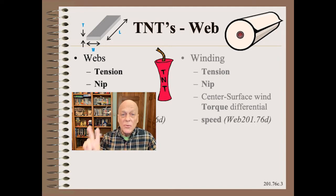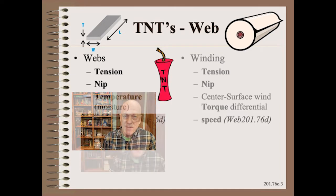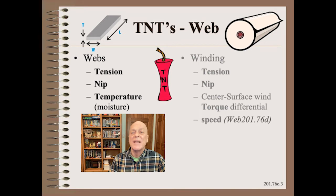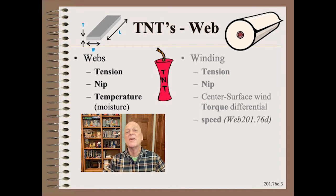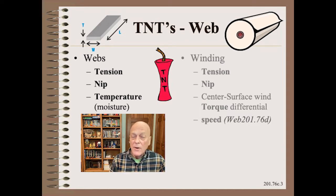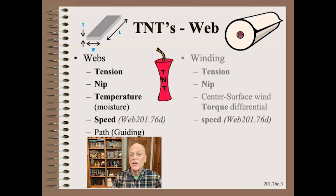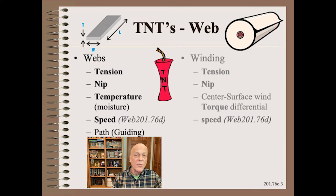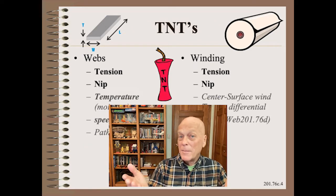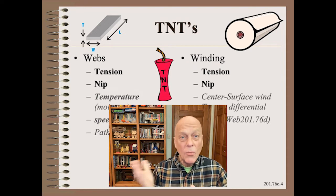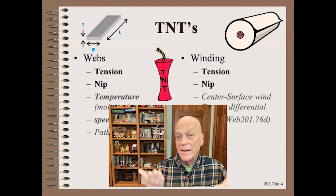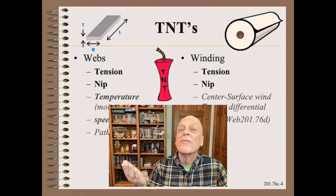All we add is two remaining important concerns. The first new control is temperature — or moisture in the case of paper webs. Web processing and properties are often quite sensitive to temperature and moisture, as well as temperature and moisture non-uniformities. The second new control is path control, often called guiding. This is the oldest of the web handling sciences at the PhD level. You might now notice something in common between the web and winding T and T's: tension and nip, which are the focus of this week's show.